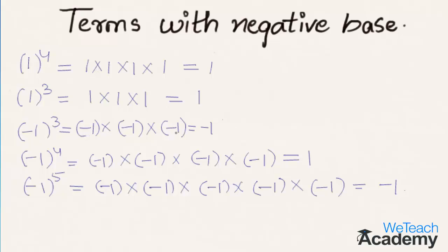Minus 1 raised to the power 3 is equal to minus 1. Similarly, minus 1 raised to the power 4 gives result 1, and minus 1 raised to the power 5 gives result minus 1. So we can say that minus 1 raised to an odd power gives result minus 1, and minus 1 raised to an even power gives positive 1.